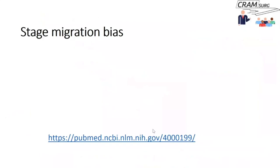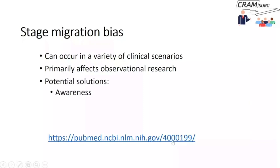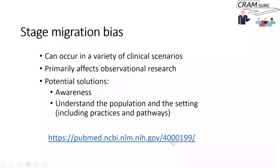Stage migration bias is quite a common phenomenon affecting not just gastric cancer but many other cancers and diseases. It was first described in the New England Journal of Medicine a few decades ago, in the context of lung cancer. The potential solutions are essentially awareness of this phenomenon and understanding the population in which studies are done — including screening practices, diagnostic practices, investigations employed, and treatment pathways.